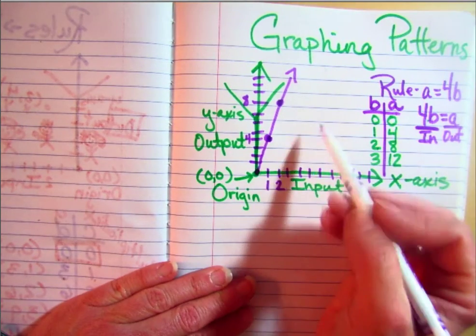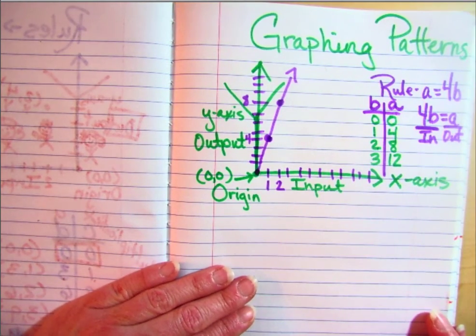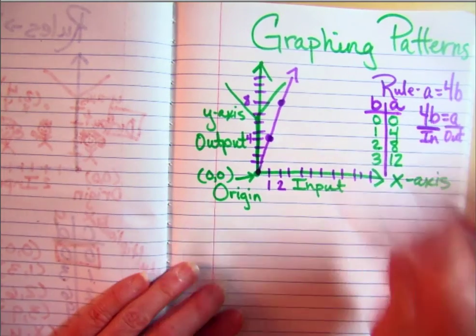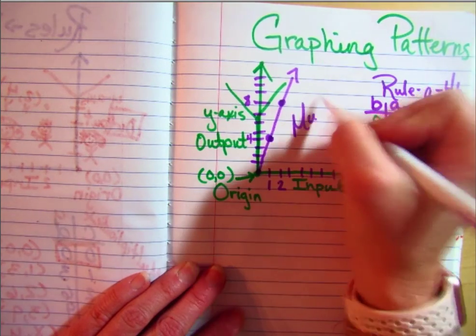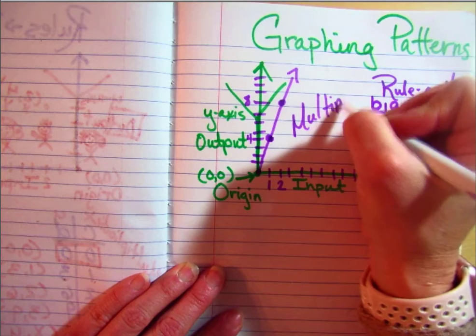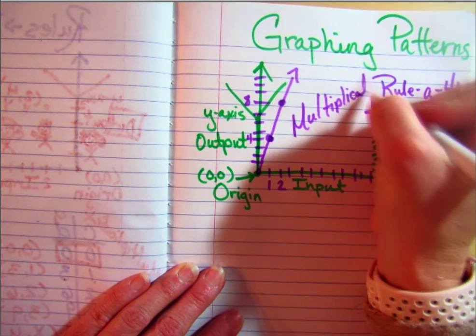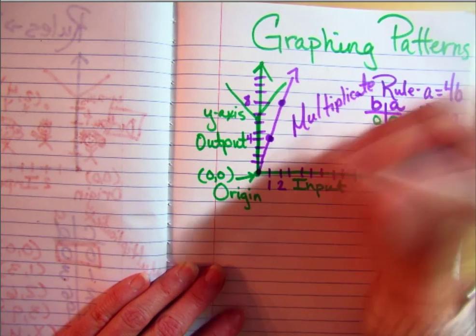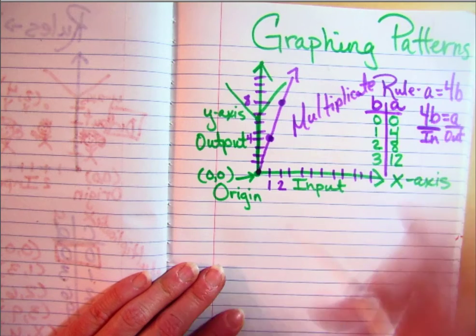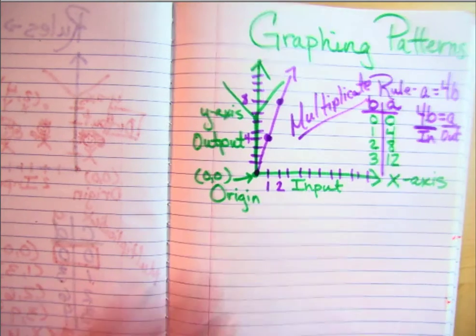The additive ones are going to look like stair steps — they're going to be really close together. So I can tell this is a multiplicative pattern because, one, the rule says it is, and two, I can look at the graph and see that.